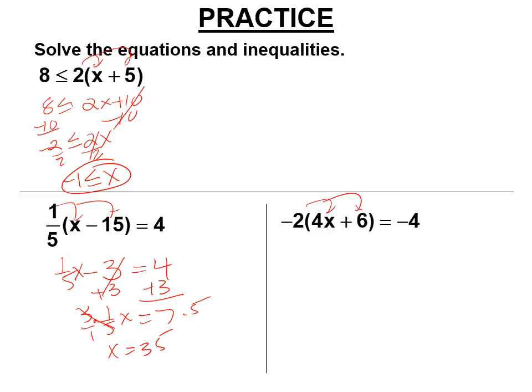Distribute a negative 2. Negative 2 times 4x, negative 8x. Minus 12 equals negative 4. Add 12 to both sides. Negative 8x equals positive 8. Divide both sides by negative 8. x equals negative 1.